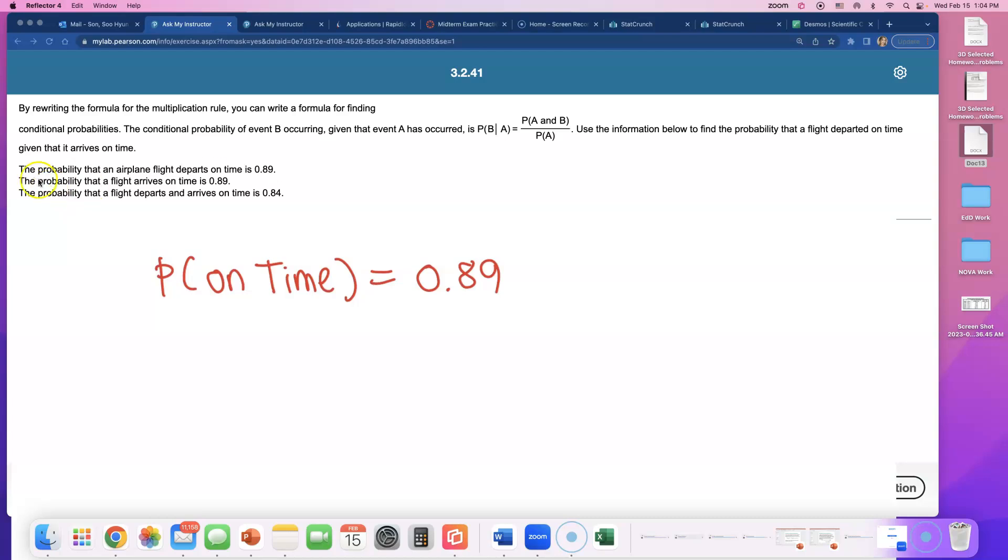The other 11% it will not leave on time, but that's very high. Next one, probability that a flight arrives on time. Oh, I shouldn't use 'on time' like this. I should make it a little bit wordier because the first probability they gave us is departs on time.